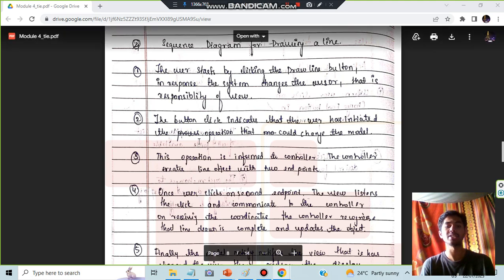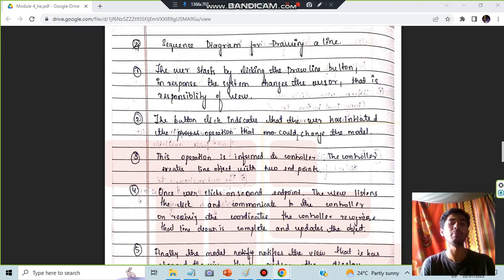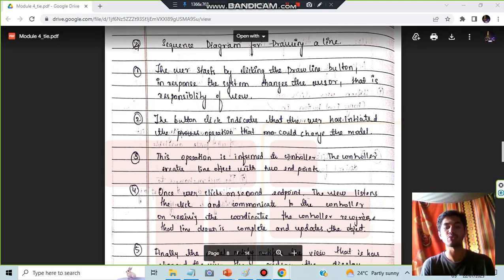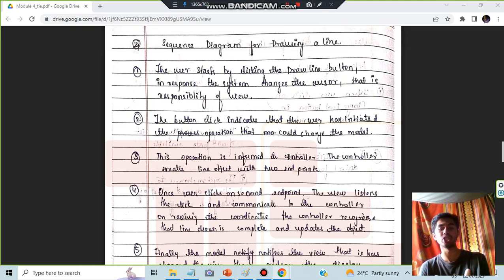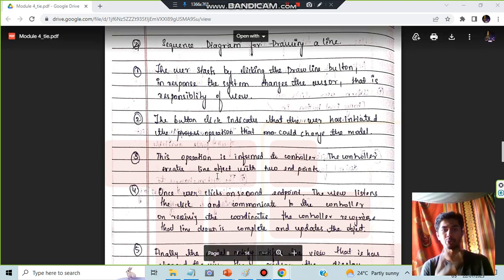The button click indicates that the user has initiated the operation that could change the model. The model is nothing but the final output. The user has clicked the button, that means there has to be some change happening in the output because the user clicks the button and performs some action most probably. This operation is informed to the controller, so the controller makes any changes and the controller creates a line object with two endpoints.